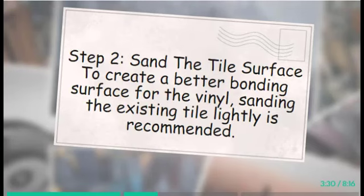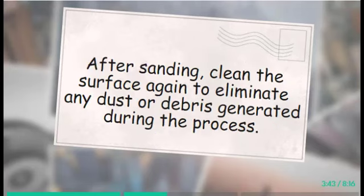Step 2: Sand the tile surface to create a better bonding surface for the vinyl. Sanding the existing tile lightly is recommended. Use a medium grit sandpaper and gently roughen the tile surface. This step helps remove the tile's glossy finish, providing better adhesion for the vinyl adhesive. After sanding, clean the surface again to eliminate any dust or debris generated during the process.